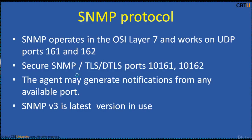SNMP operates in the application layer, i.e. layer 7 of the OSI model. The SNMP agent receives requests on UDP port 161. The manager sends requests from any available source port to port 161 in the agent. The agent response will be sent back to the source port of the manager. The manager receives notifications, i.e. traps or inform requests, on port 162.